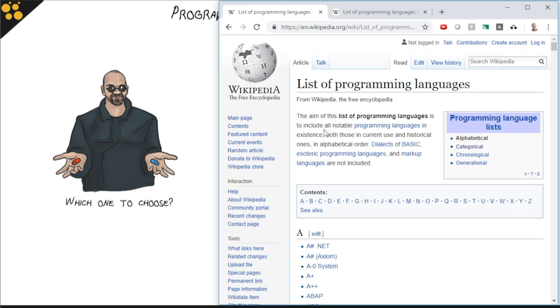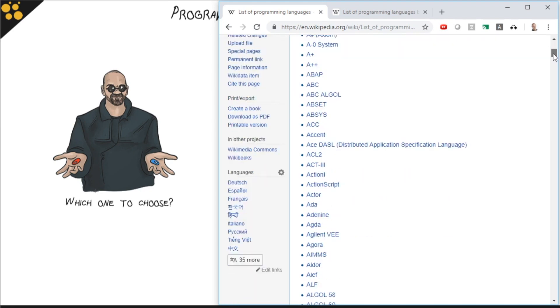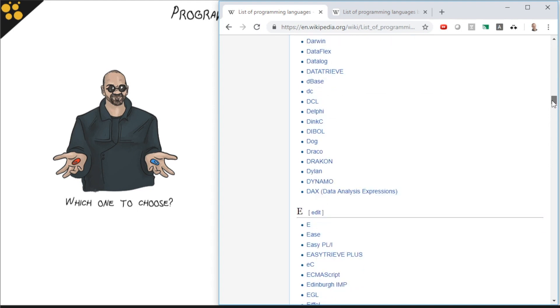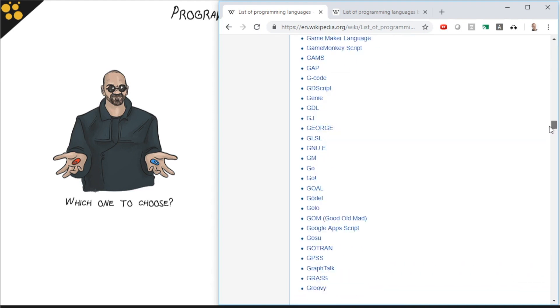Here is the Wikipedia page for the list of programming languages, and I'm just going to scroll down here a little bit and let me know when you are overwhelmed because I already am. This is a lot of choices.